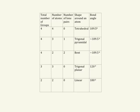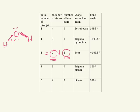Another example is water. This is the Lewis structure for water. There are two atoms around the central atom and two lone pairs. So again, the number of groups is 4, but two are atoms and two are lone pairs. Then the shape is bent — we can see the shape is bent. And this bond angle is approximately 109.5 degrees.